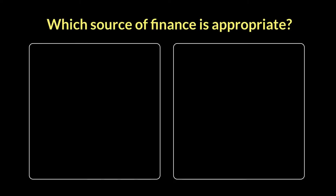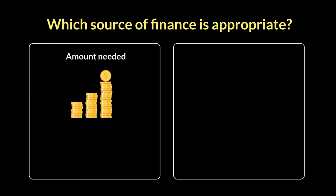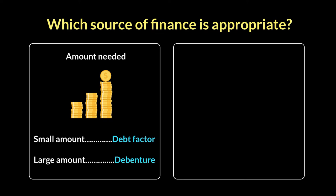Thirdly, the amount that you need will also be a big determinant in deciding which source of finance is most feasible. If it's a small amount, then a short-term source like debt factoring might be more advisable. Compare that to when you need a large sum — that's where perhaps a debenture, selling shares, or something of a longer-term nature may be more appropriate. You simply look at your need for finance, and that's also a clue as to which source to take.